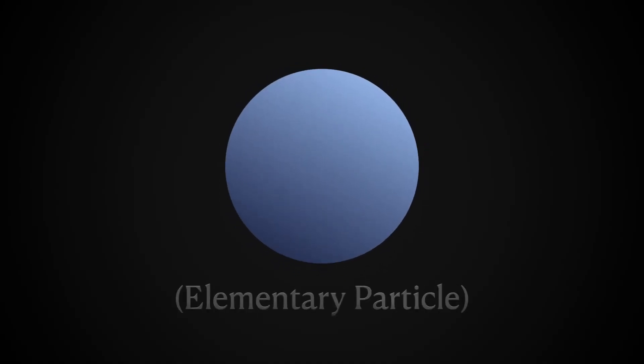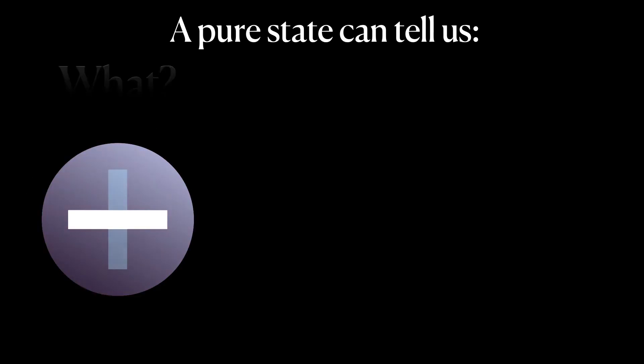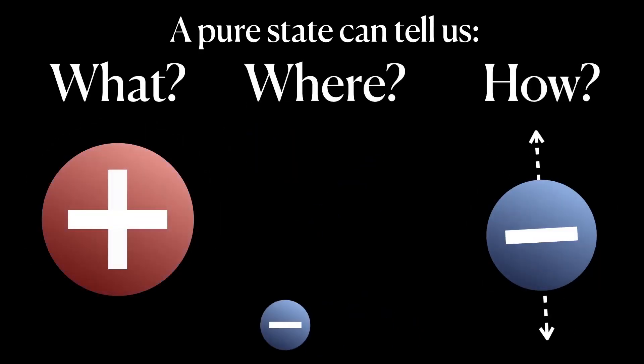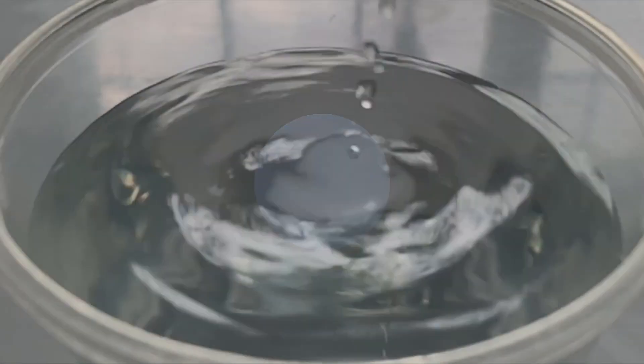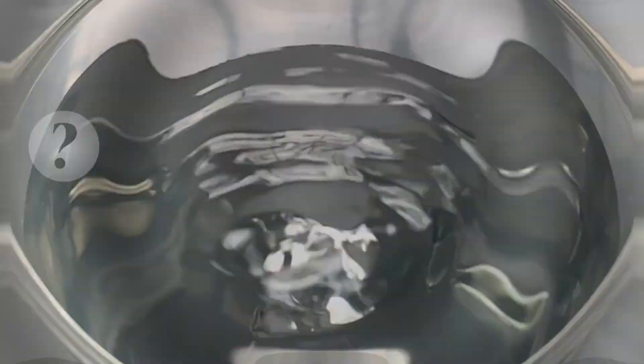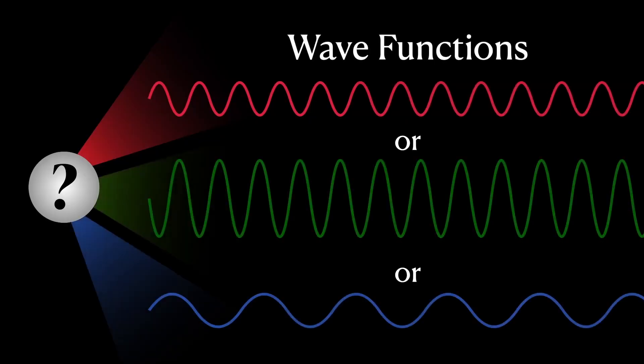Now, much like this light bulb, the smallest particles that make up our world also have distinct pure states — not colors, but what, where, or how it is. Strangely, at this scale, particles behave like waves. Likewise, their pure states are described as wave functions.